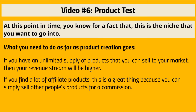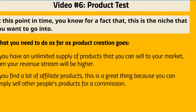The person creating the private label rights product has their name removed, so you pretty much get all the credit. For example, if you go find a private label rights product in your niche — say, lowering cholesterol — you can compile an ebook or report that somebody can buy, or turn that report into a video course. Either way, with product creation or private label rights, you get 100% of the actual revenue.